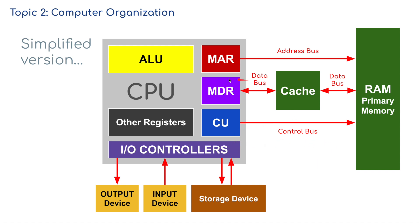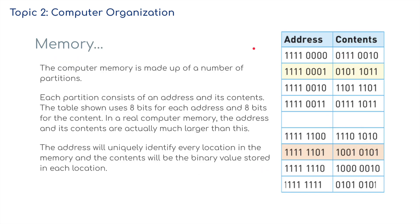Part of the syllabus says you need to be able to produce a block diagram, so this is the sort of thing we're looking for. The computer memory is made up of a number of partitions. Each partition consists of an address and its contents. The table shown uses 8 bits for each address and 8 bits for the content. In real computer memory, the address and its contents are actually much, much bigger than this — we're talking millions, billions, trillions of zeros and ones.